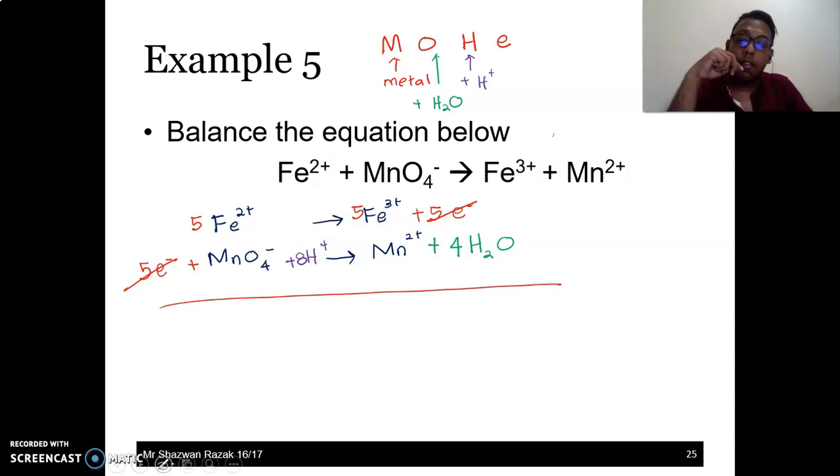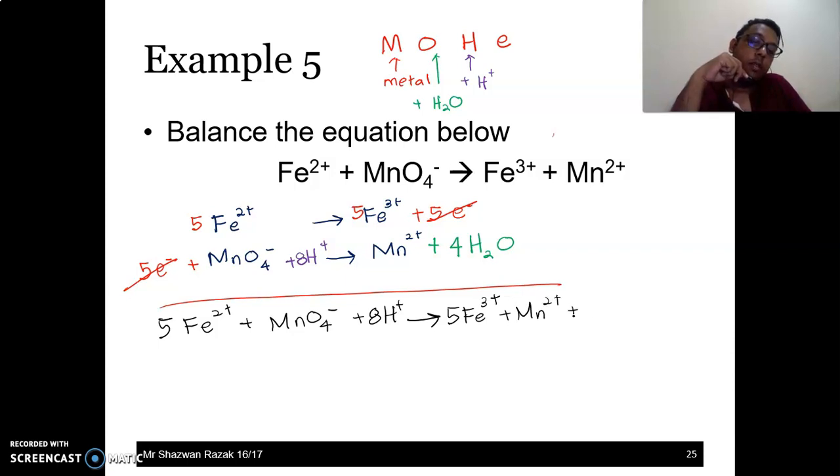So what do we do? We just write the final answer, which will be 5Fe²⁺ plus MnO₄⁻ plus 8H⁺ becomes 5Fe³⁺ plus Mn²⁺ plus 4H₂O.